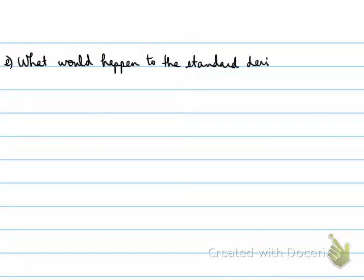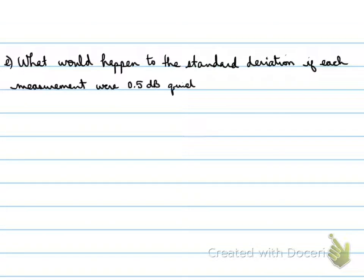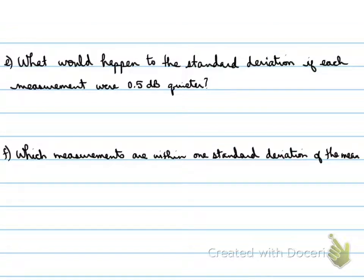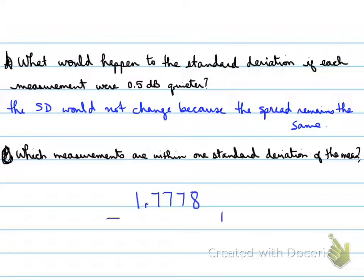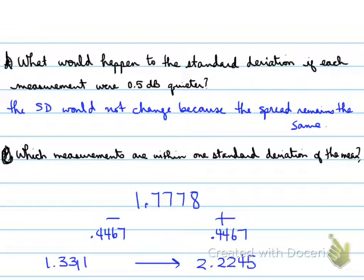What would happen to the standard deviation if each measurement were 0.5 decibels quieter? The standard deviation would not change because the spread remains the same. Which measurements are within one standard deviation of the mean? Adding and subtracting 0.4467 from the mean gives a range of 1.3311 to 2.2245, so values within that range are within one standard deviation of the mean.